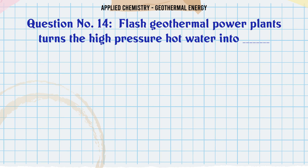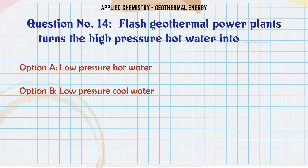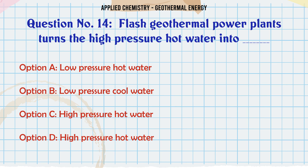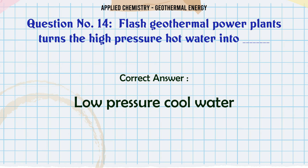Flash geothermal power plants turn high-pressure hot water into: A: Low-pressure hot water, B: Low-pressure cool water, C: High-pressure hot water, D: High-pressure hot water. The correct answer is low-pressure cool water.